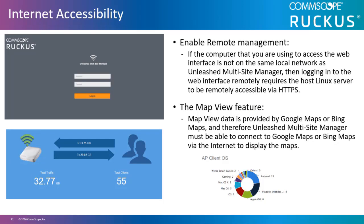If the computer you are using to access the web interface is not on the same local network as the Unleashed Multi-Site Manager, then logging in remotely requires the host Linux server to be remotely accessible via HTTPS. Map View data is provided by Google Maps or Bing Maps, and therefore Unleashed Multi-Site Manager must be able to connect to Google Maps or Bing Maps via the internet to display the maps.